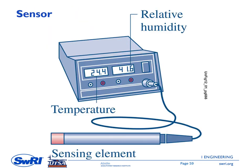This picture shows a schematic of a sensor used to measure the temperature of moist air and its relative humidity. It works based on capacitance and resistance type sensors to measure both temperature and relative humidity.